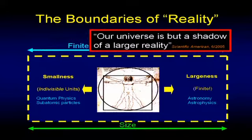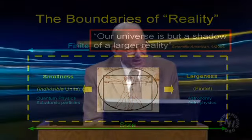Scientific American in June of 2005 ran an article that included this conclusion: 'Our universe appears to be but a shadow of a larger reality.' That's not a philosopher talking — that is Scientific American's conclusion from the fact that our constants in physics seem to be changing. If they're changing, even a little, they imply that the real reality is something larger than what we're experiencing.